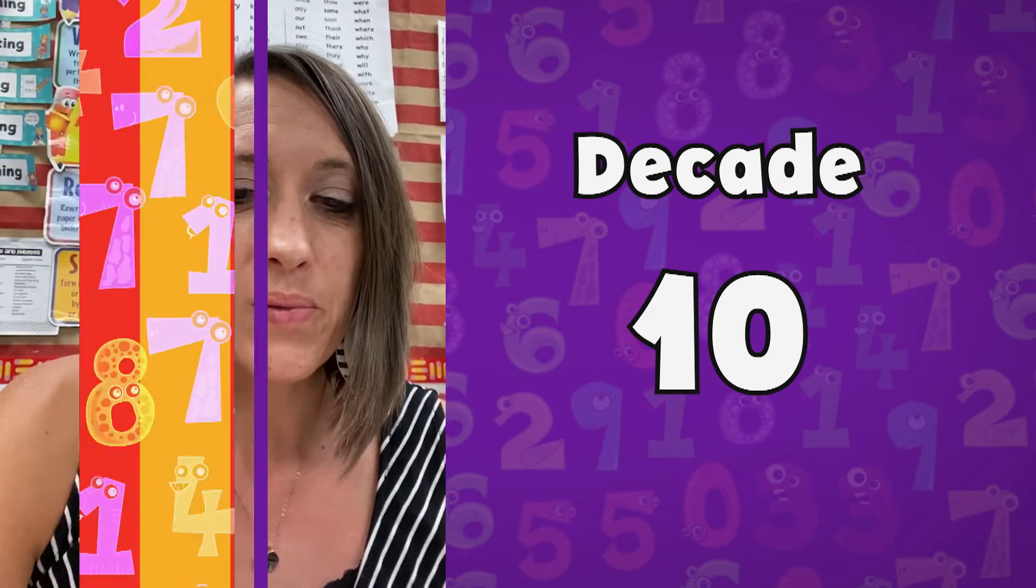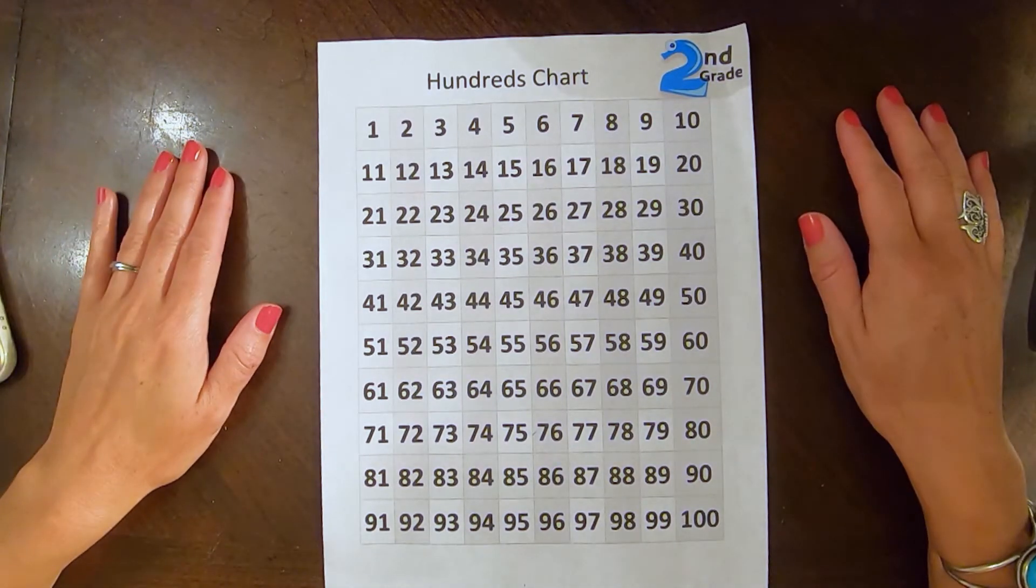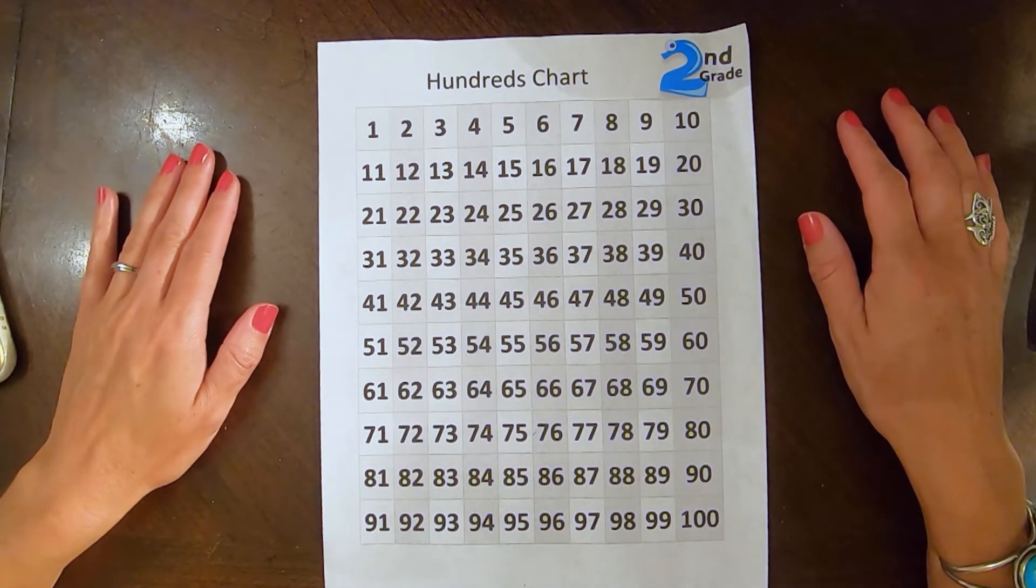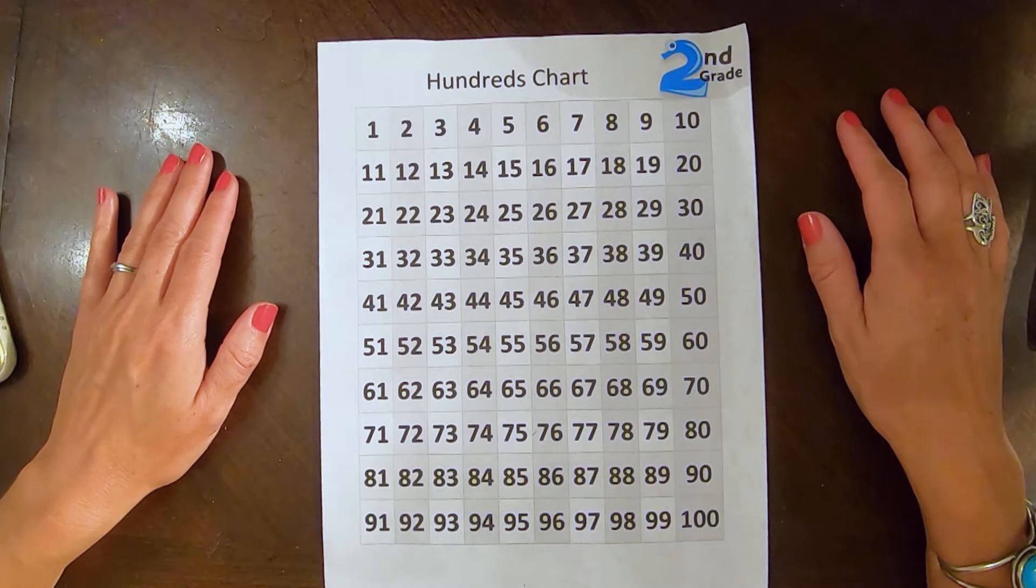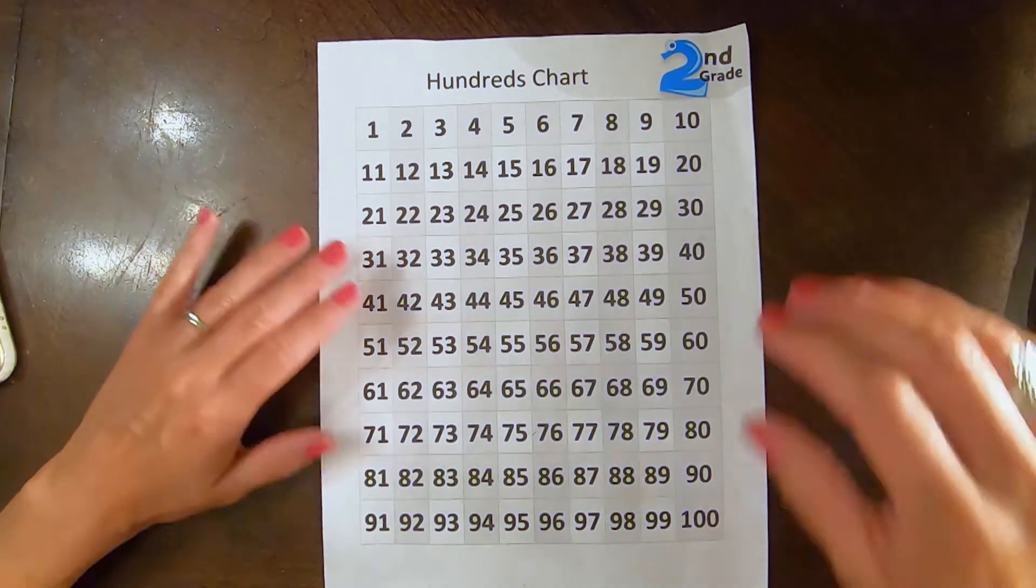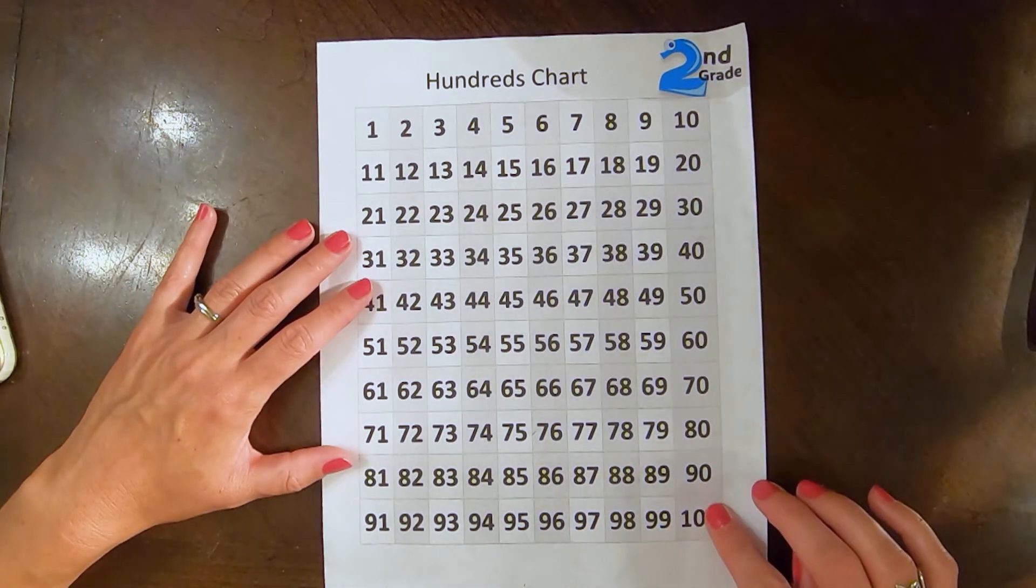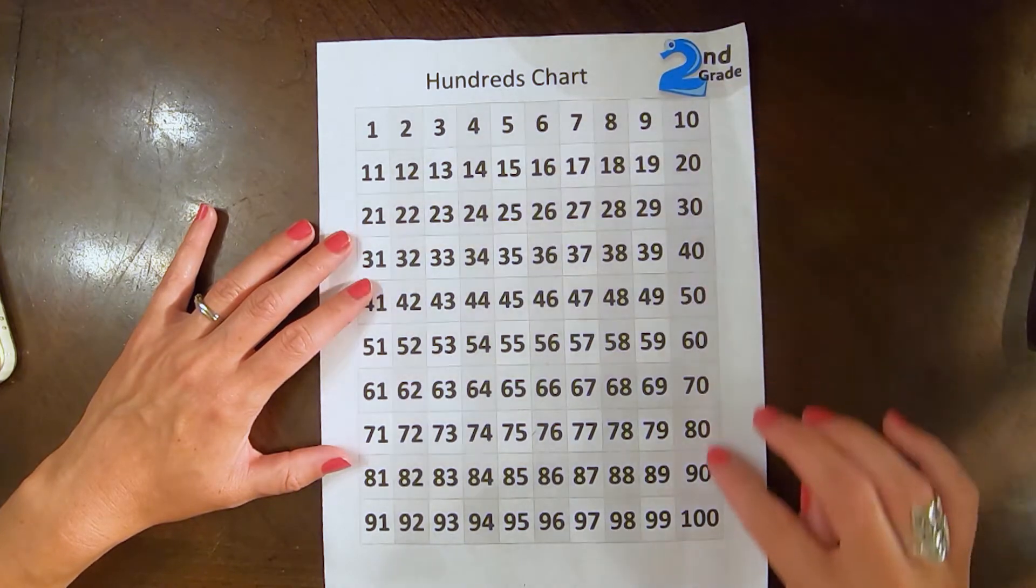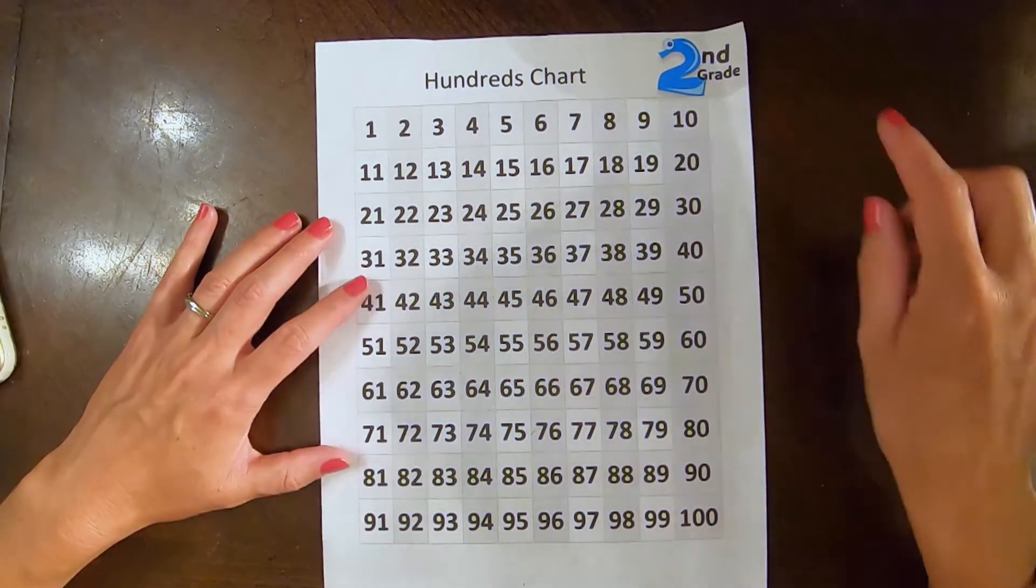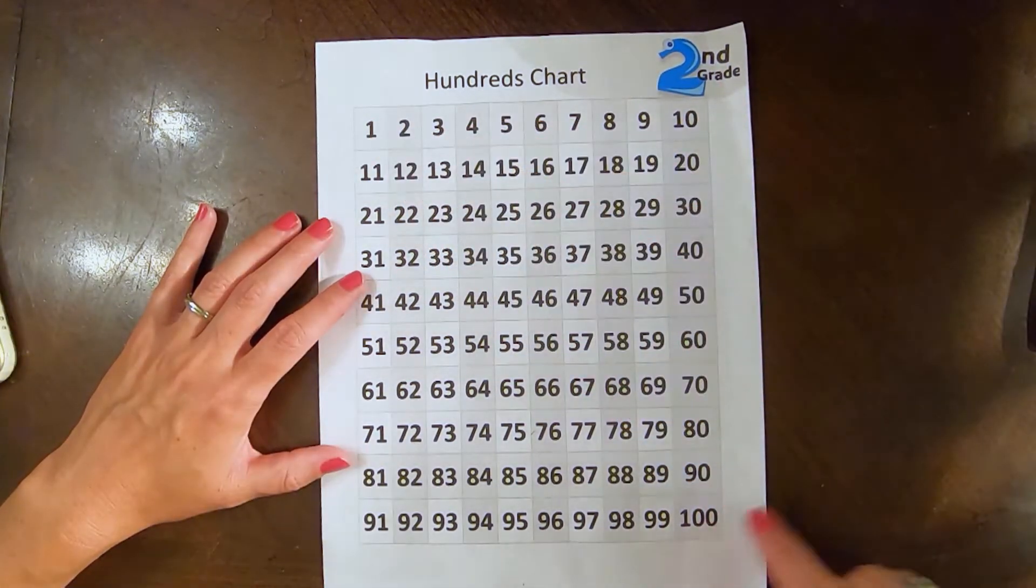Let's go. Okay students, we're going to count off the decade using our hundreds chart first. Go ahead and take your hundreds chart. Now, I noticed that in the right column, these are all going up by 10. This hundreds chart is numbered 1, 2... 100.